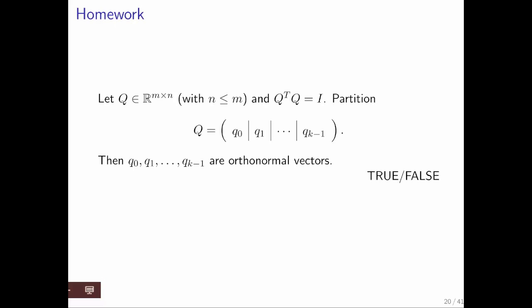So here's another homework. This asks you to prove it in the other direction. OK. What if we have a matrix Q such that Q transpose Q is equal to the identity?